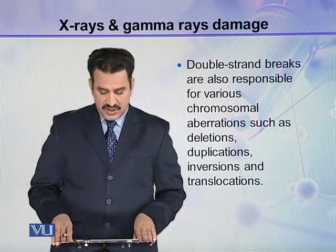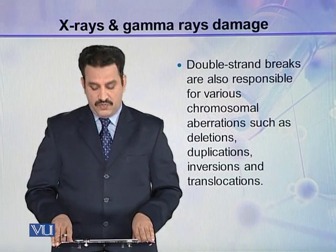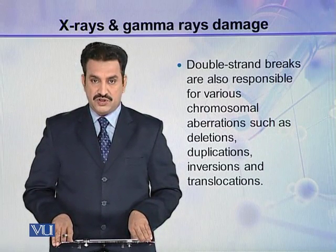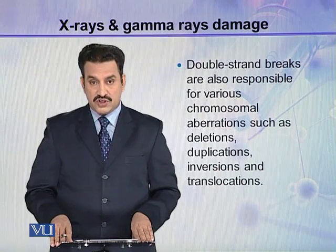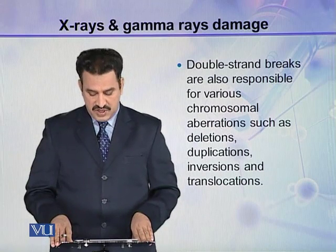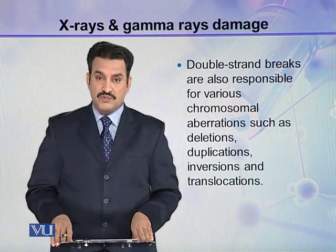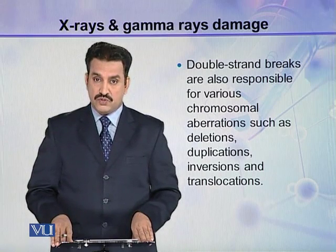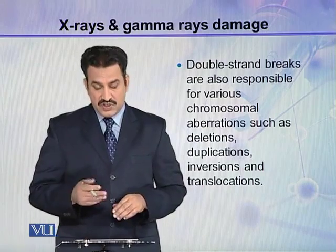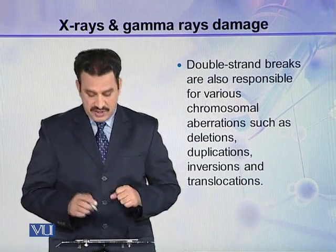Double strand breaks are also responsible for various chromosomal aberrations, such as deletions, duplications, inversions, and translocations — four types of chromosomal aberrations caused by ionizing radiations.